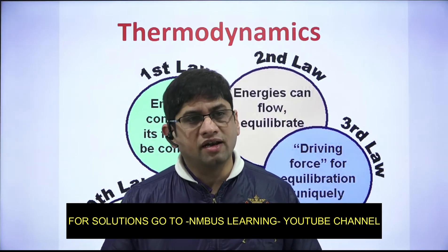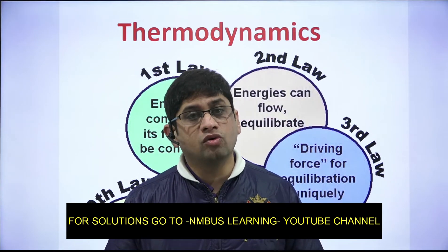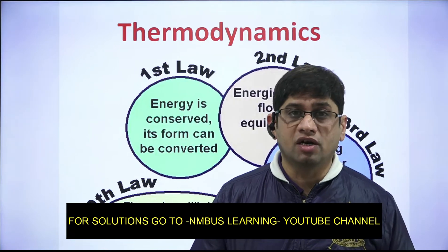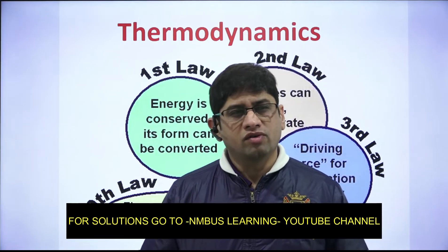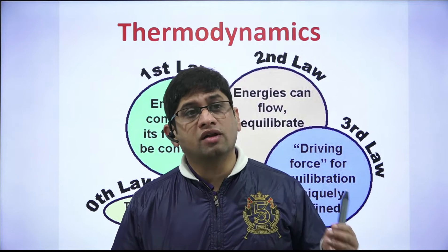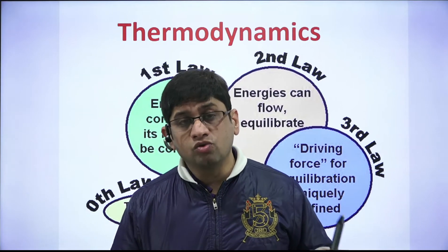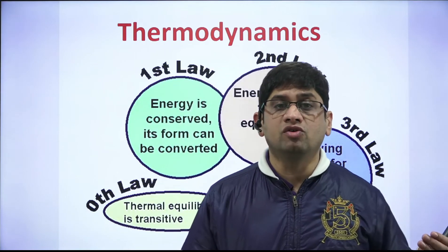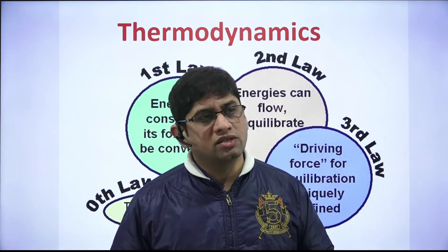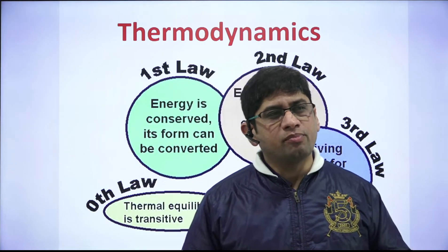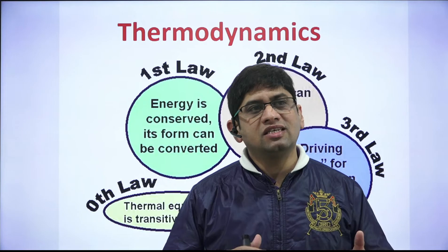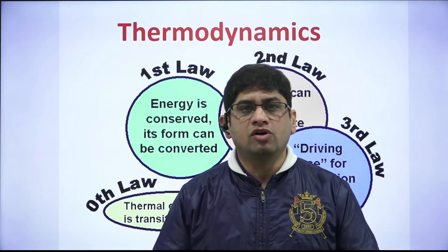For an ideal gas, there are three entropy change formulas to choose from: one involves v1, v2, t1, t2; another involves p1, p2, t1, t2; and the third involves v1, v2, p1, p2. Questions can also be polytropic index based, requiring calculation of the polytropic specific heat cn in terms of cv.